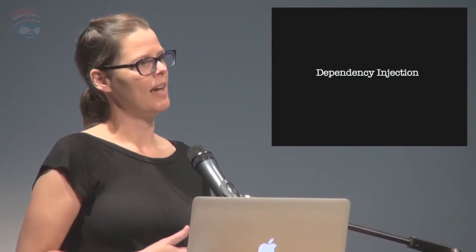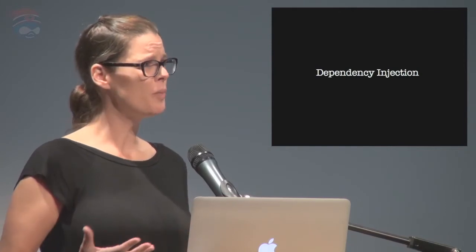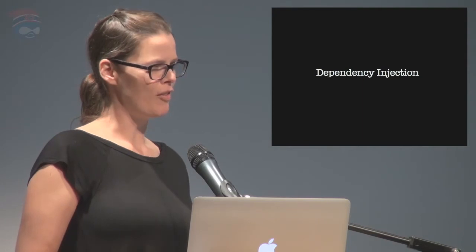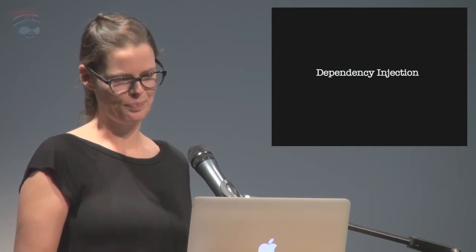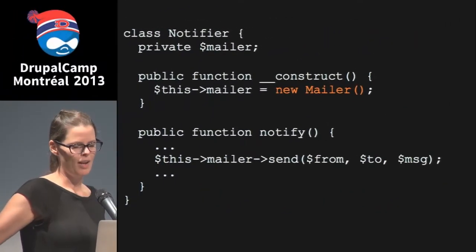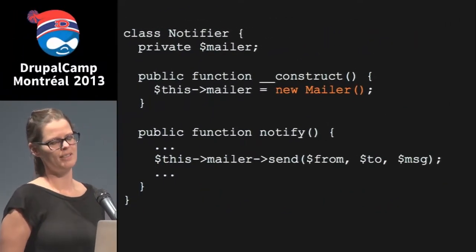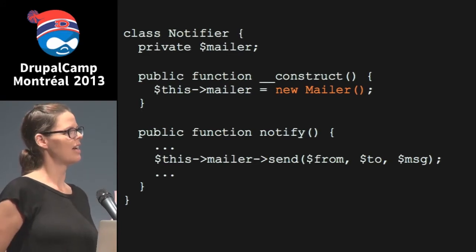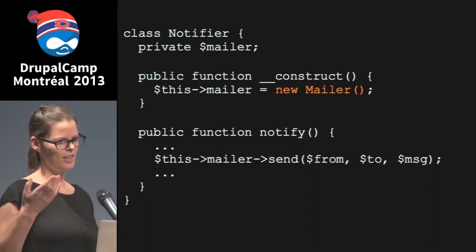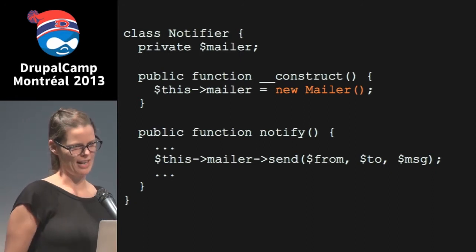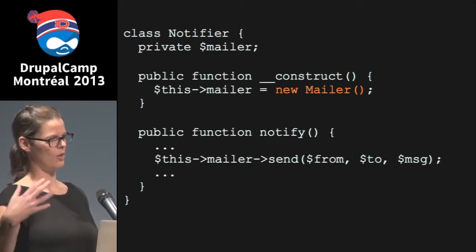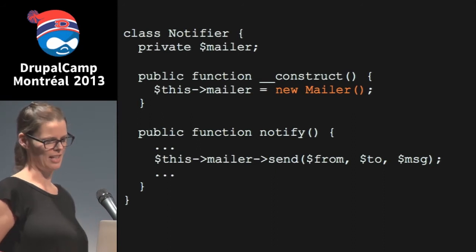Dependency injection is almost too much to call a design pattern because it's such a simple idea — and it scares people off because it sounds complicated, but it's really very simple. Here's an example of a class with a dependency: a Notifier class uses a Mailer class to send an email. In the constructor, it instantiates an object of the Mailer class, which it then uses — it calls the send method to send an email.